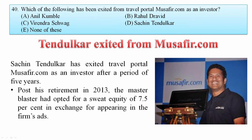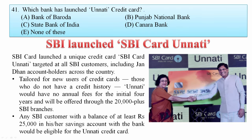Which one of the following has exited from travel portal Musafir.com as an investor? Sachin Tendulkar exited from Musafir.com. He had invested five years ago and took an equity of 7.5% in exchange for appearing in the firm's ads. Your answer is Sachin Tendulkar. SBI launched the SBI Card Unnati — a unique credit card targeted at all SBI customers including Jan Dhan account holders, with no annual fee for the initial four years, offered through 20,000-plus SBI branches.